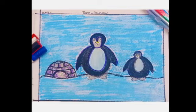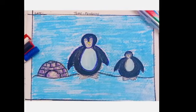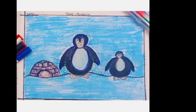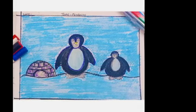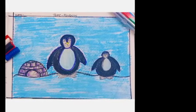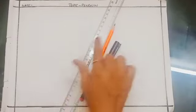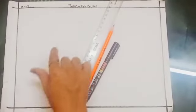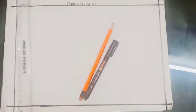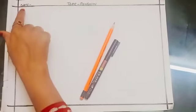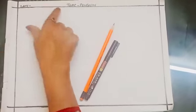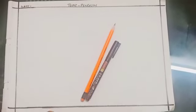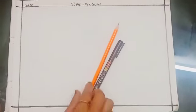Penguin is a seabird. Penguin cannot fly in air; they use their wings to swim. Their body is in black and white colors. First you draw with pencil, then after do the outline with black marker.